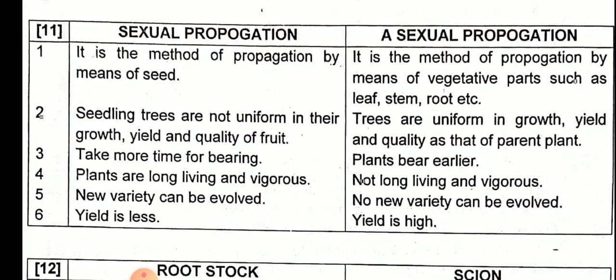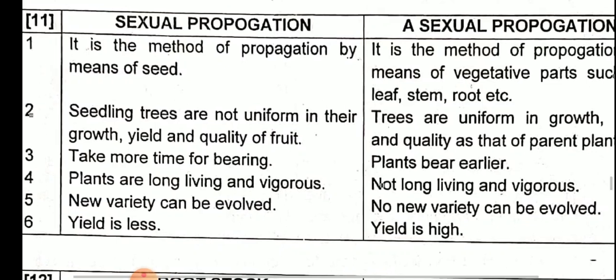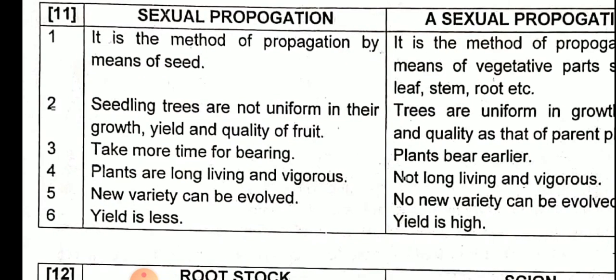Third point: in sexual propagation, plants take more time for bearing because they are grown by seed. In asexual propagation, plants bear fruits earlier — about two to four years. Fourth point: in sexual propagation, plants are long-living and vigorous. In asexual propagation, plants are not long-living and vigorous.